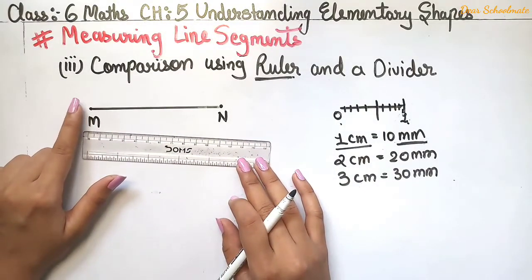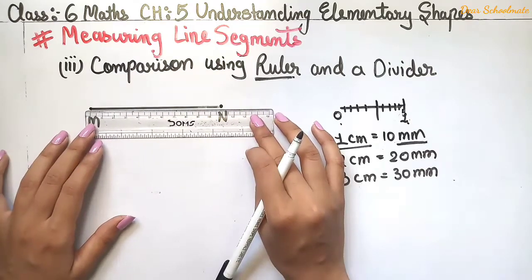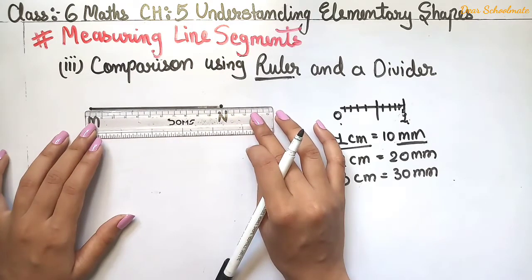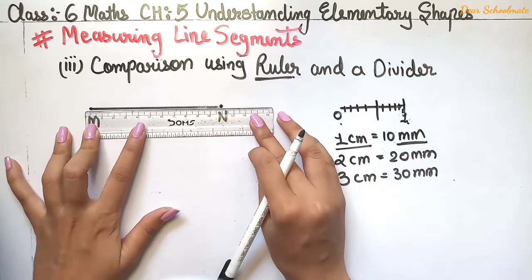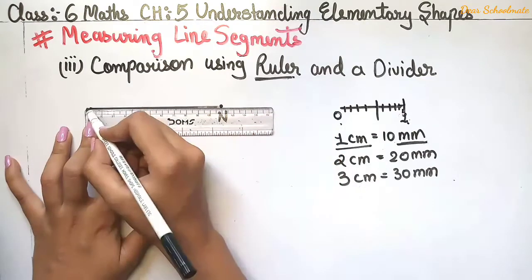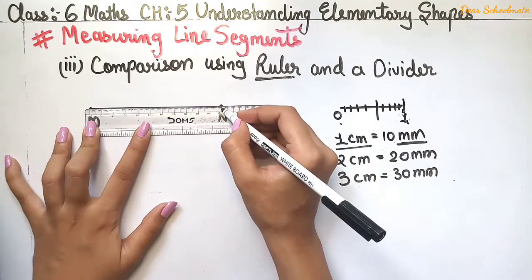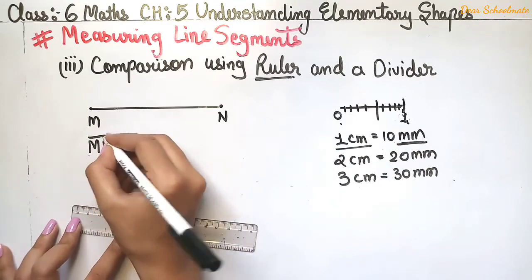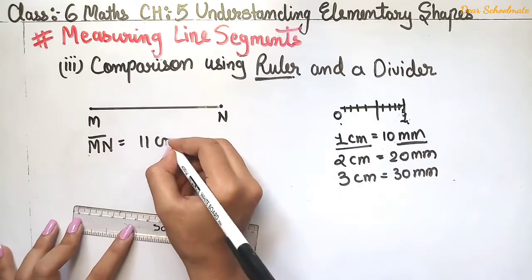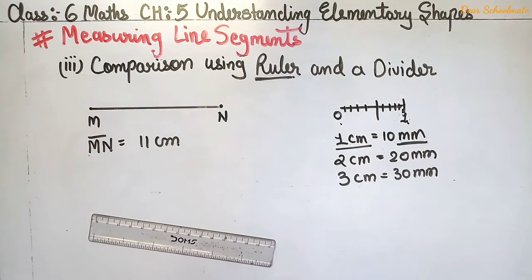To measure a line segment using a ruler, we place the 0 mark at the starting point of the line segment. Then we read where the endpoint falls. Here, the line segment MN is 11 cm long. However, this method also has a disadvantage.